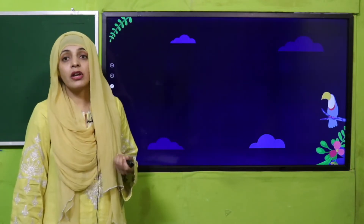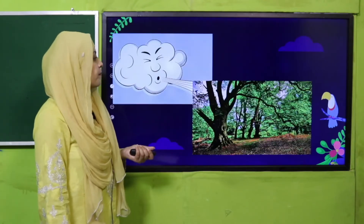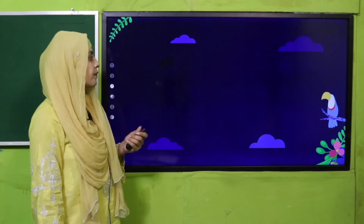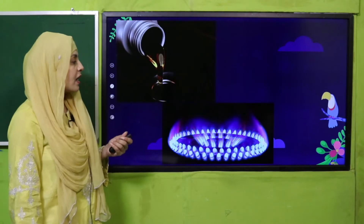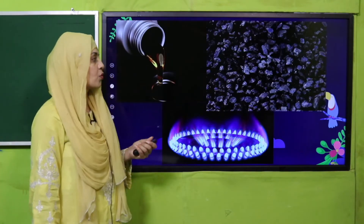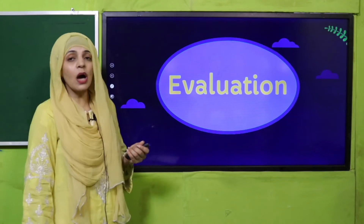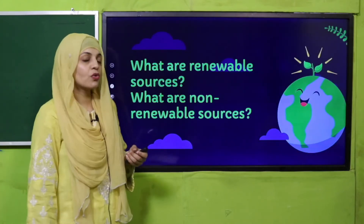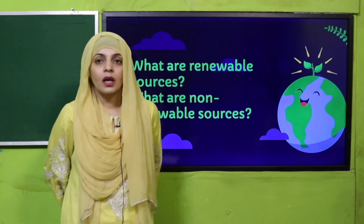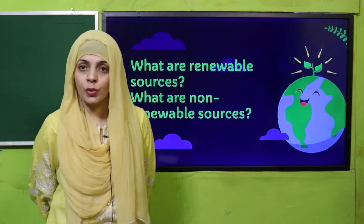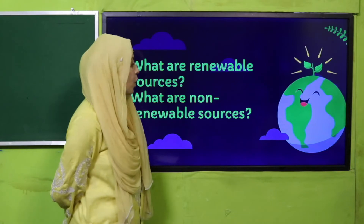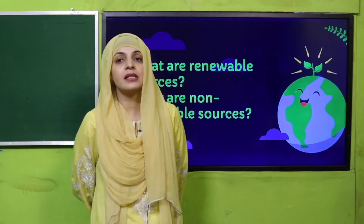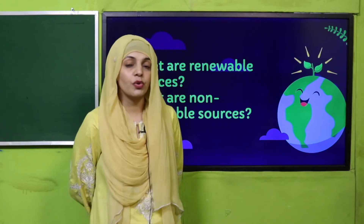Sun, water, and air — these are renewable resources. Air and forests are also renewable, whereas oil, natural gas, and coal are non-renewable resources. So quickly tell me: what are renewable resources, which can be generated as quickly as they are consumed? And what are non-renewable resources, which cannot be regenerated as quickly as they are consumed?